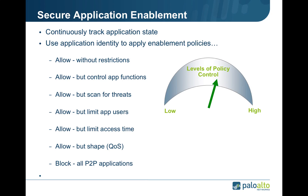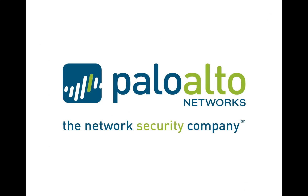The identity of the application and its functions is used to apply secure enablement policies — policies that are as liberal as allow everything without restrictions, or that control specific functions, allow a particular application but limit access time, allow and shape using quality of service or bandwidth control. Or finally, you can identify applications and block specific types such as peer-to-peer, circumventors, external proxies, and encrypted tunnels that are not VPN related. That concludes today's multimedia session. We appreciate your time. Thanks for listening.